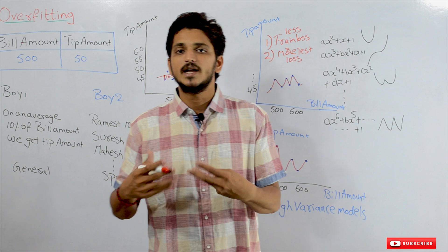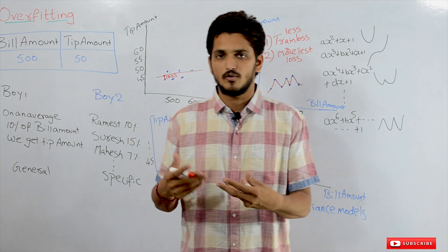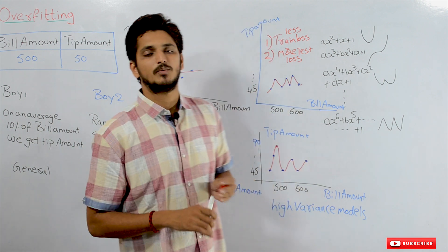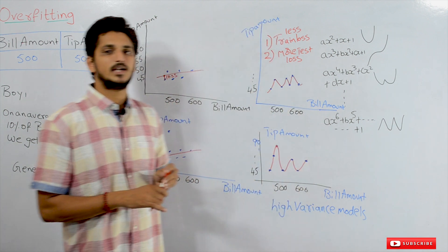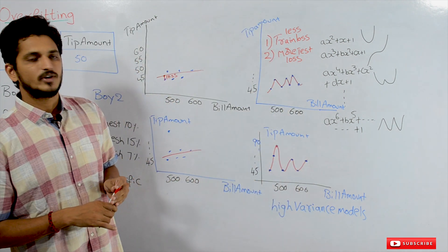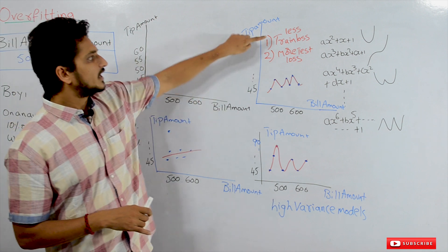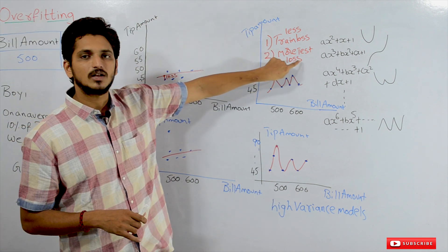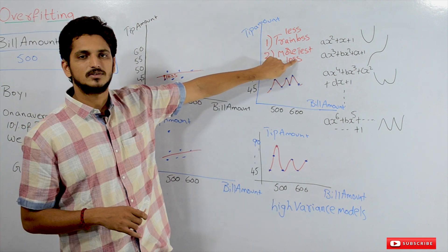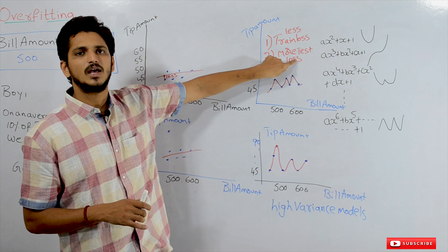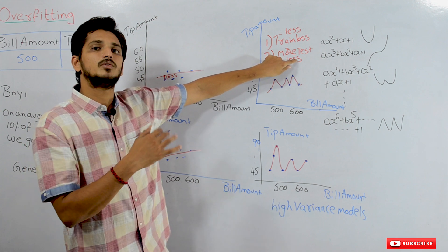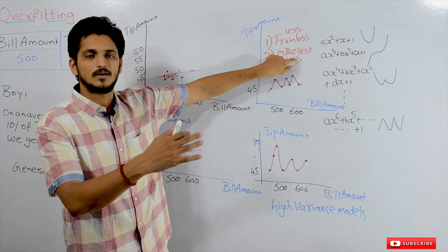This is a very important point: how do we identify overfitted models? If training loss is less and testing loss is more, then we say that our model is overfitted to the data.